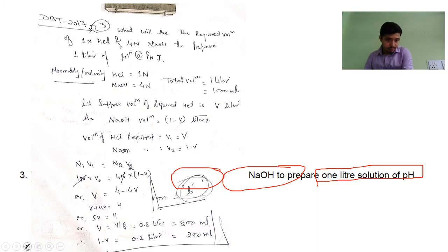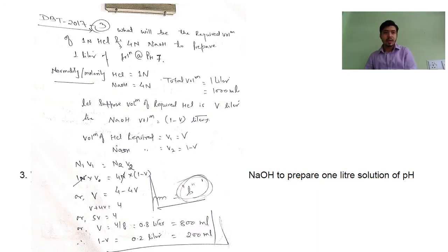This is question number 3. First, we have to remember that normality and molarity are similar when the acidity and basicity are 1. For HCl, basicity is 1, and for NaOH, acidity is 1.